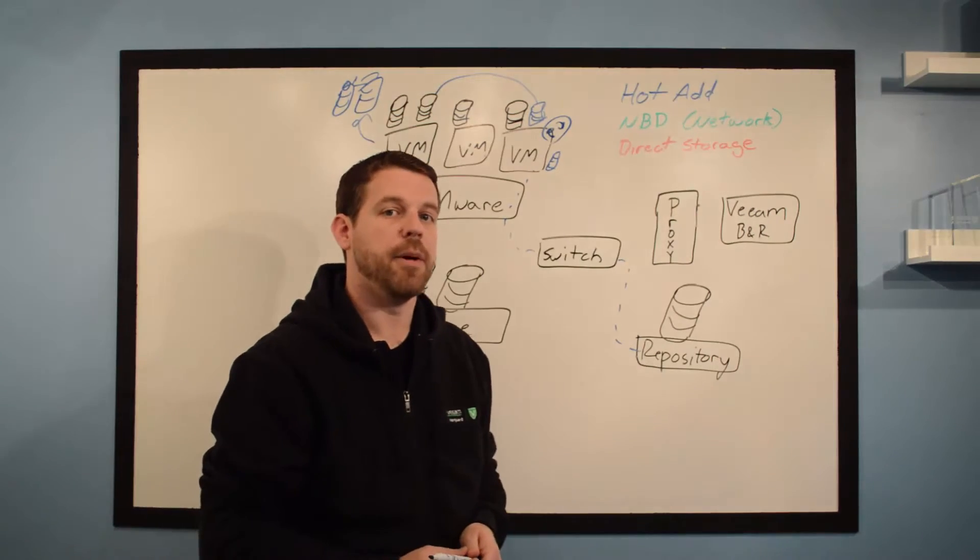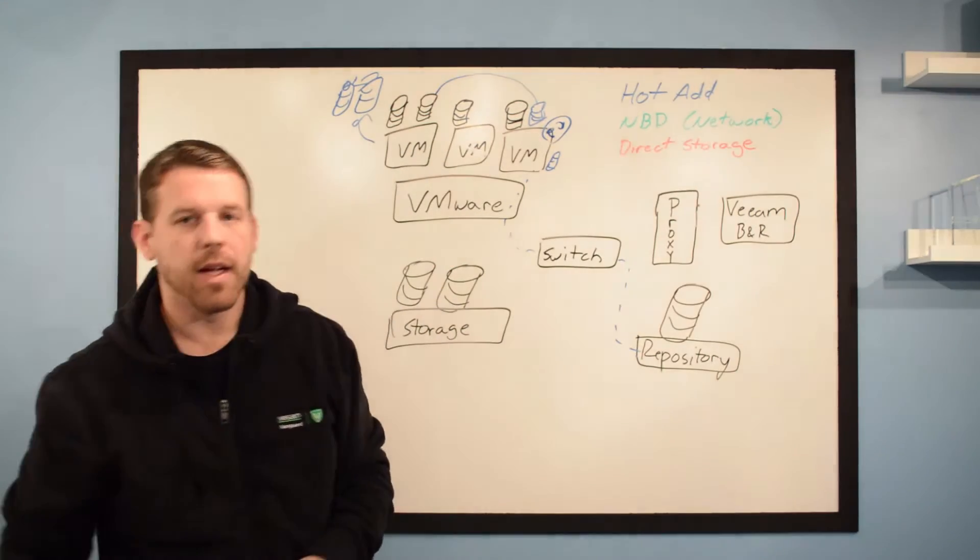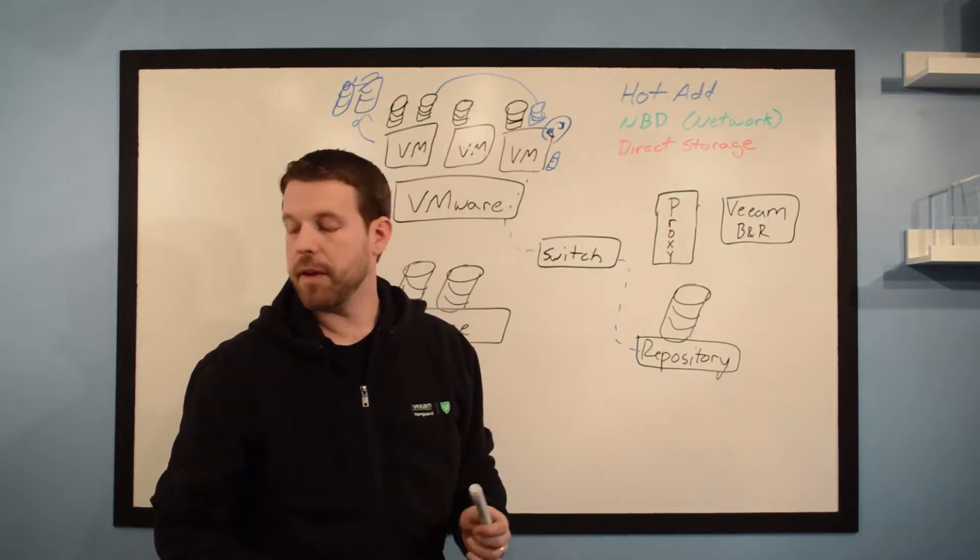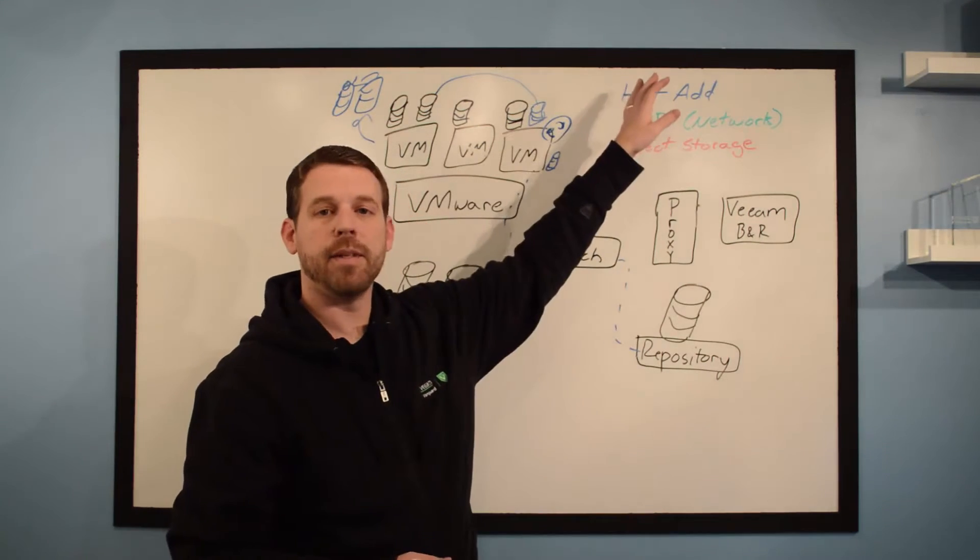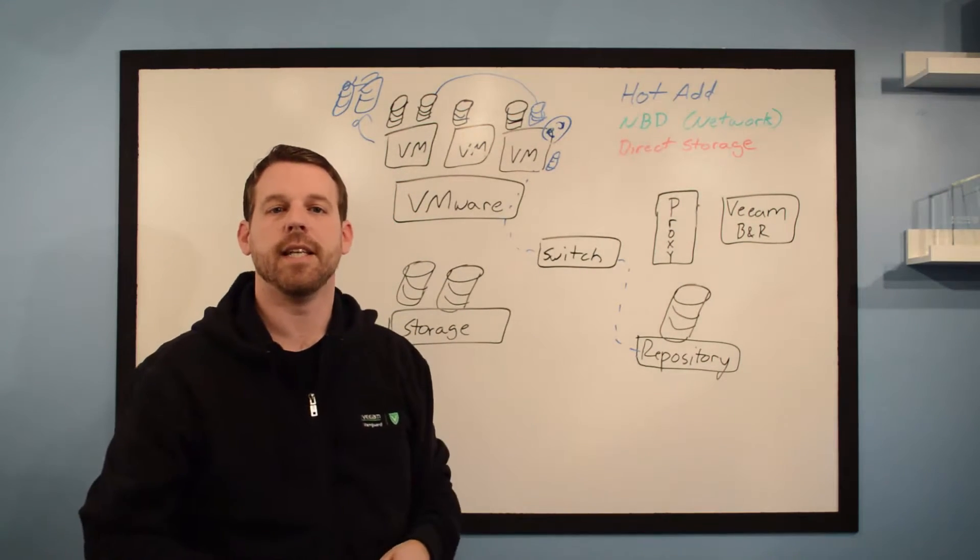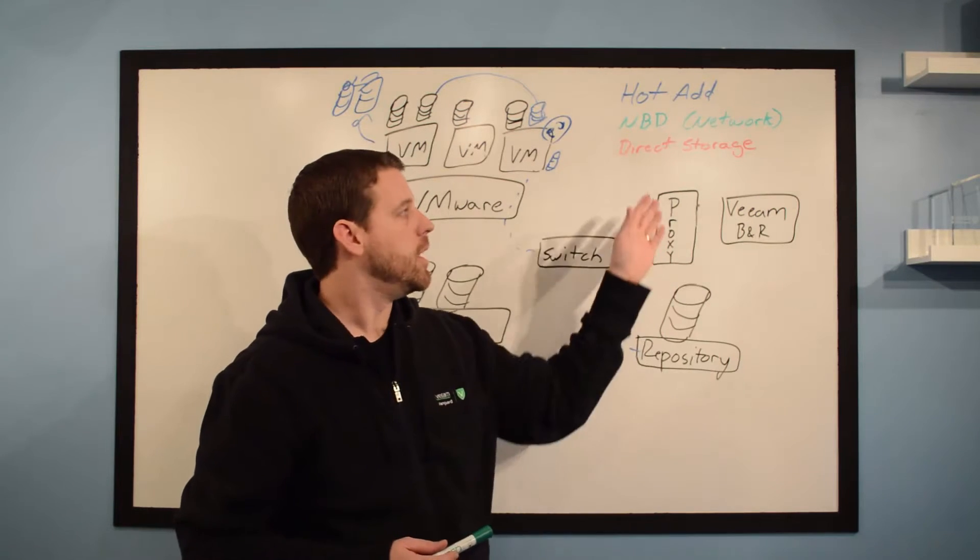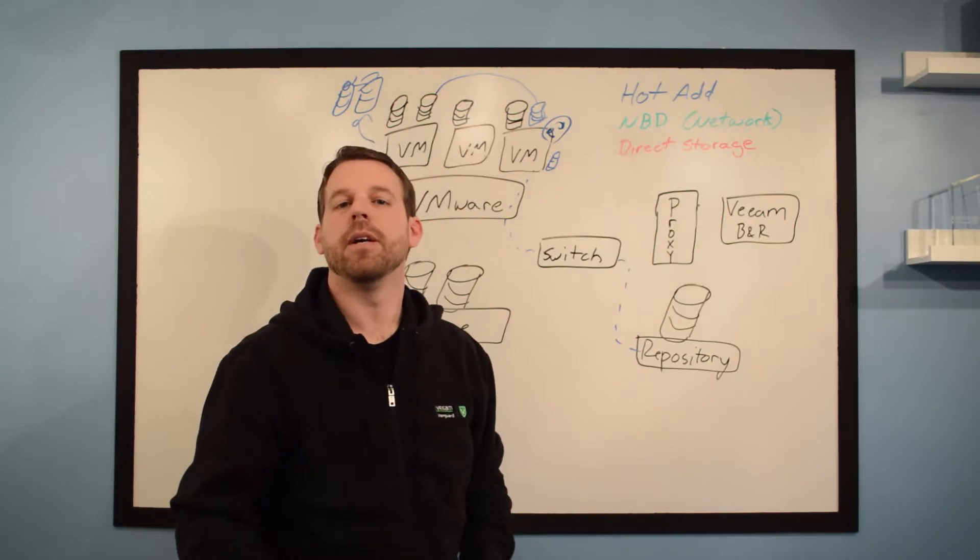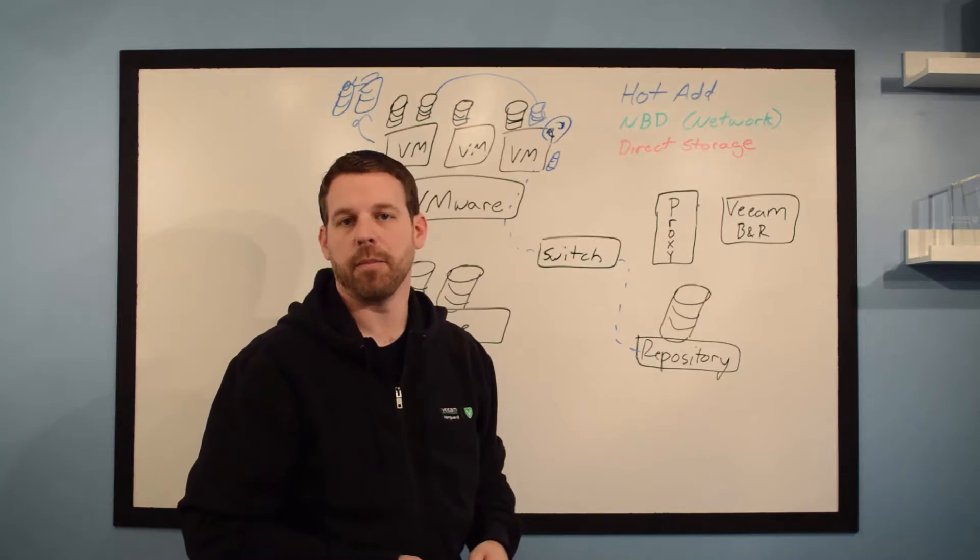Let's talk about the second mode, network mode. Now network mode is a mode that we'll fail back to. If hot add happens to fail, we can fail back to this network mode. If direct storage happens to fail, we can also fail back to network mode.